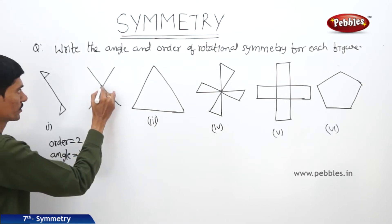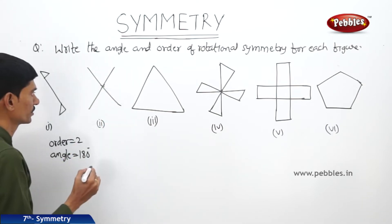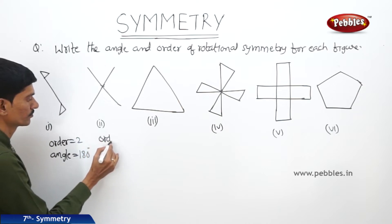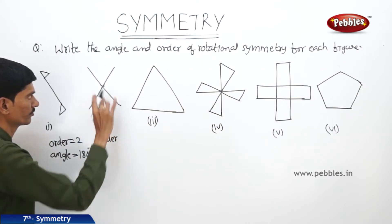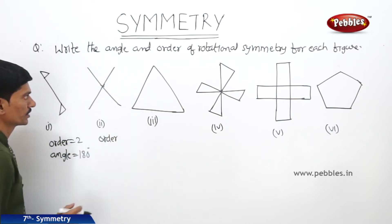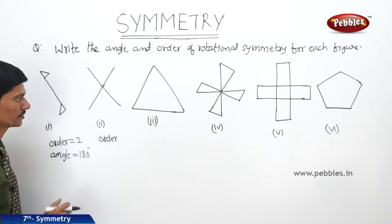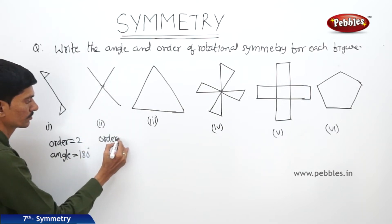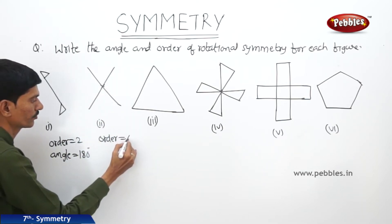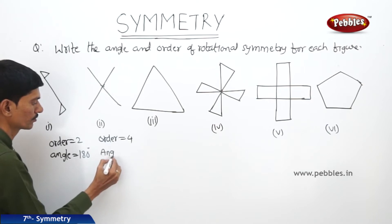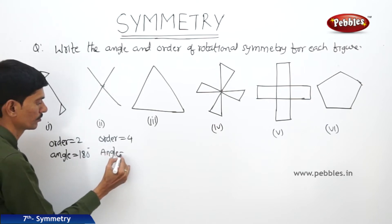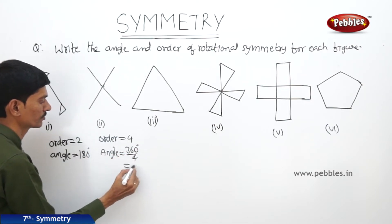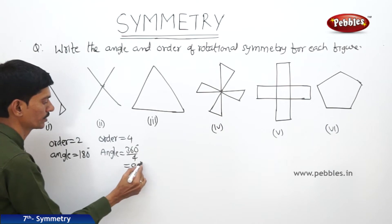Now in case of the letter X, the order is 4 because 4 times it is getting back its original position when rotating. So the order is 4. Then the angle is 360 degrees divided by 4, which equals 90 degrees.